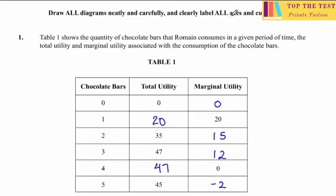For 0 units of chocolate bars consumed, they give us a total utility of 0, meaning you have no satisfaction at all — we're not eating any chocolate bars. There's no change in utility, so the marginal utility here will also be 0.